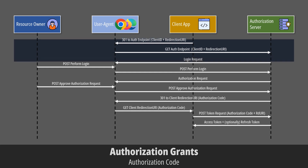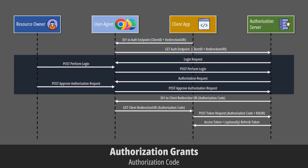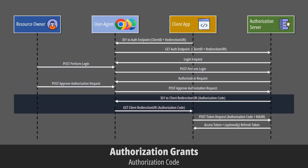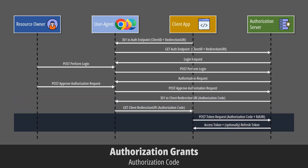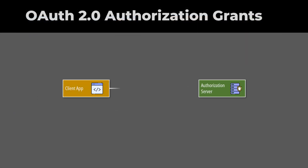We authenticate against the authorization server and decide whether to grant or deny the access request. If the request is accepted, the authorization server stores the approval details and redirects the resource owner's browser to the redirection URI. The redirect includes an authorization code — this is the authorization grant. The client then requests an access token using its own credentials and the authorization code. If the request is valid, the authorization server responds with an access token and, optionally, a refresh token.